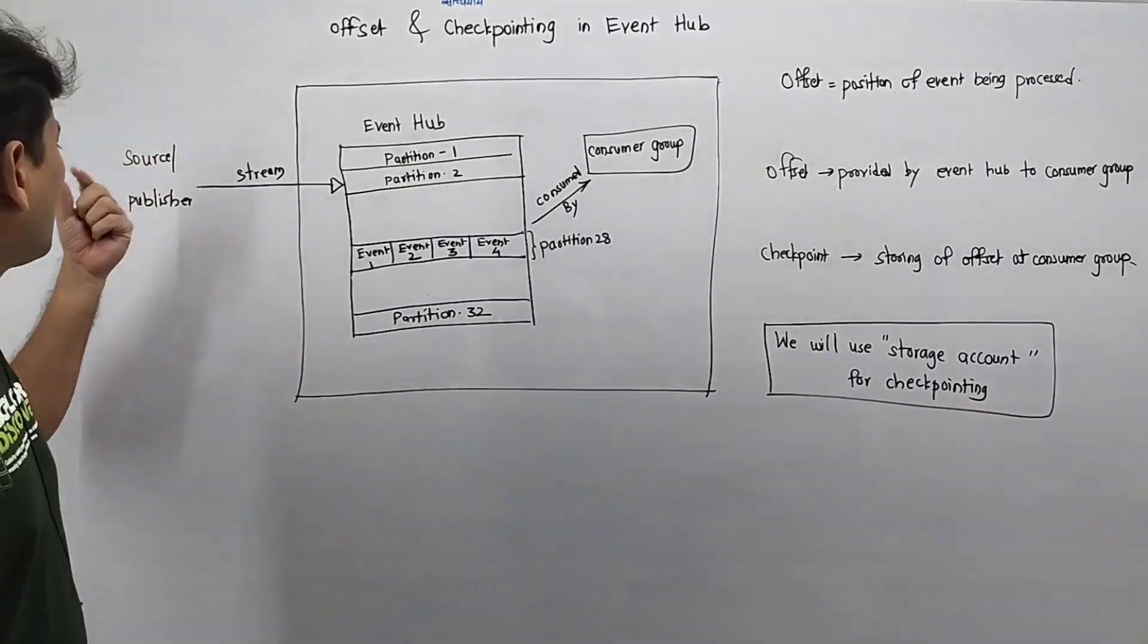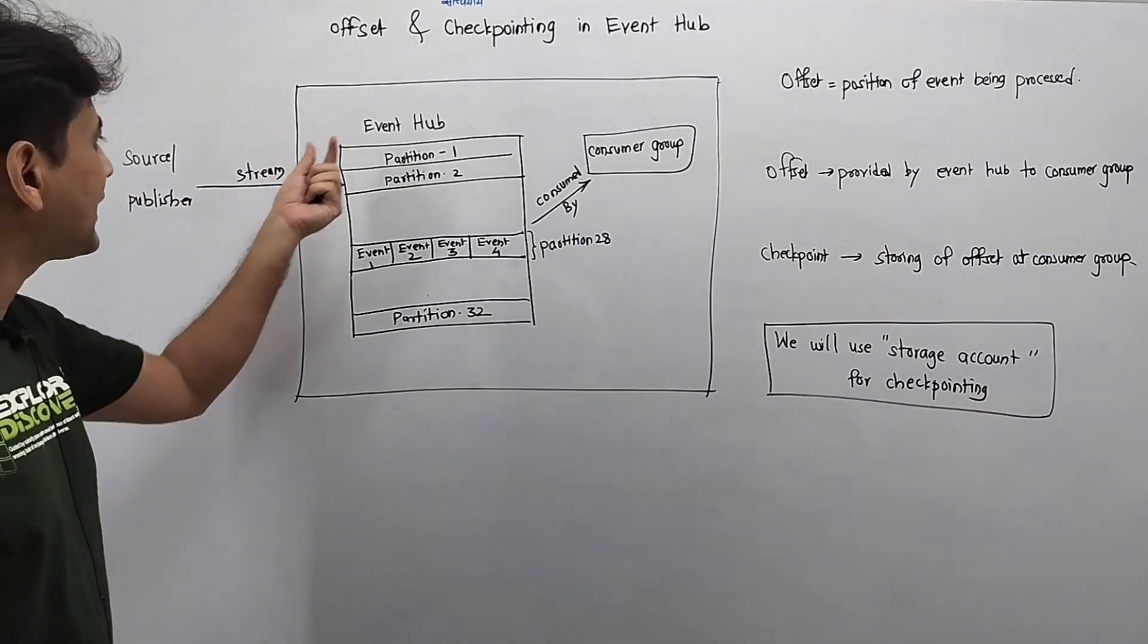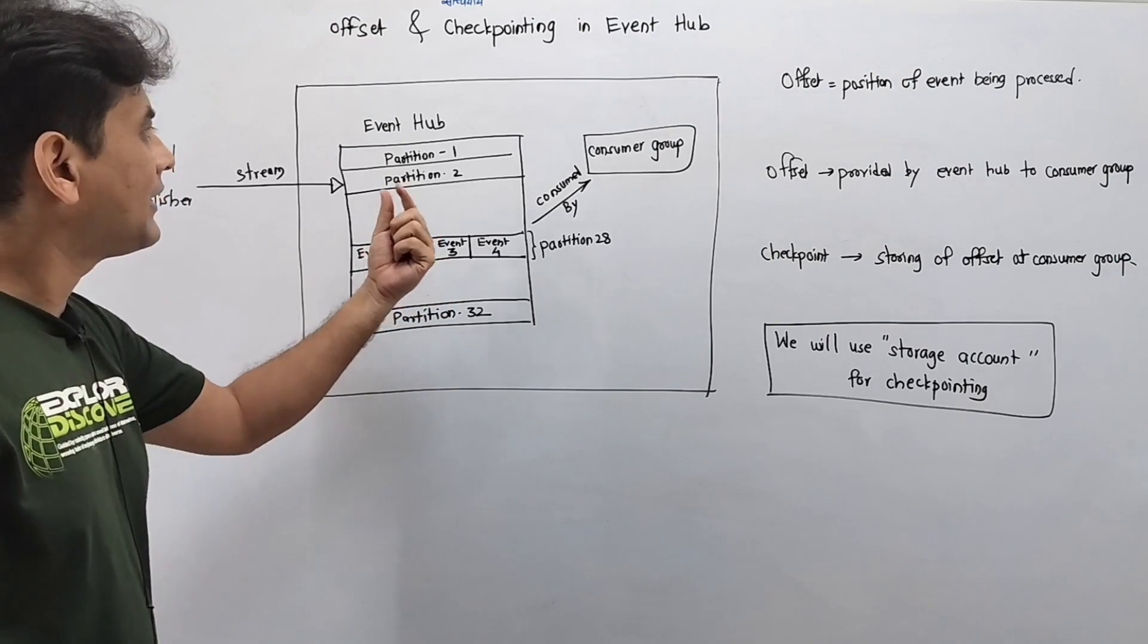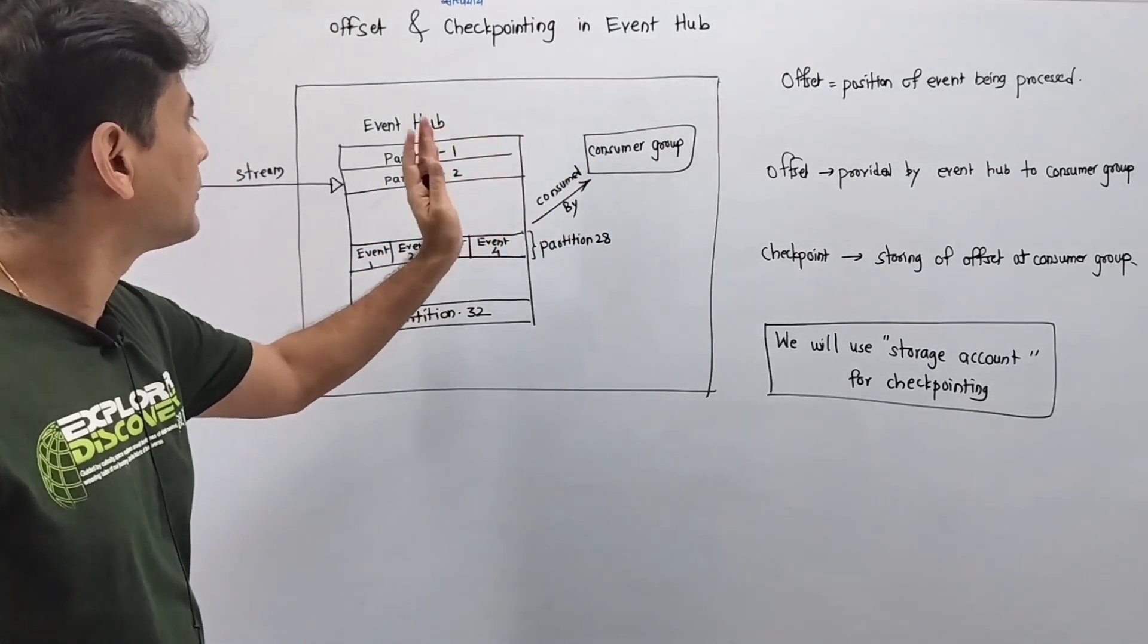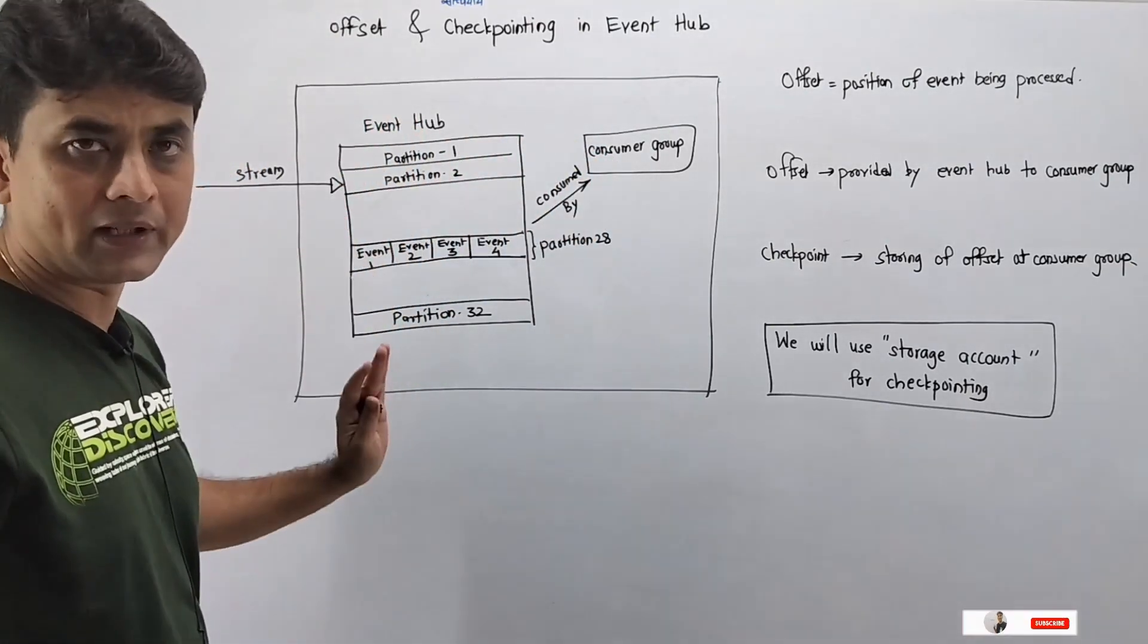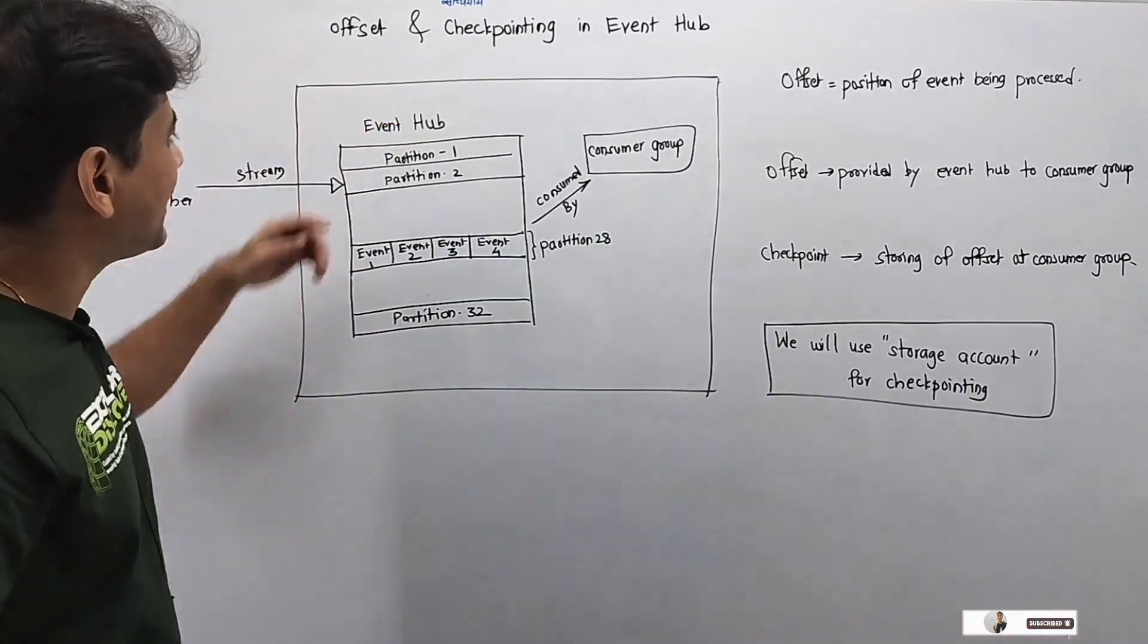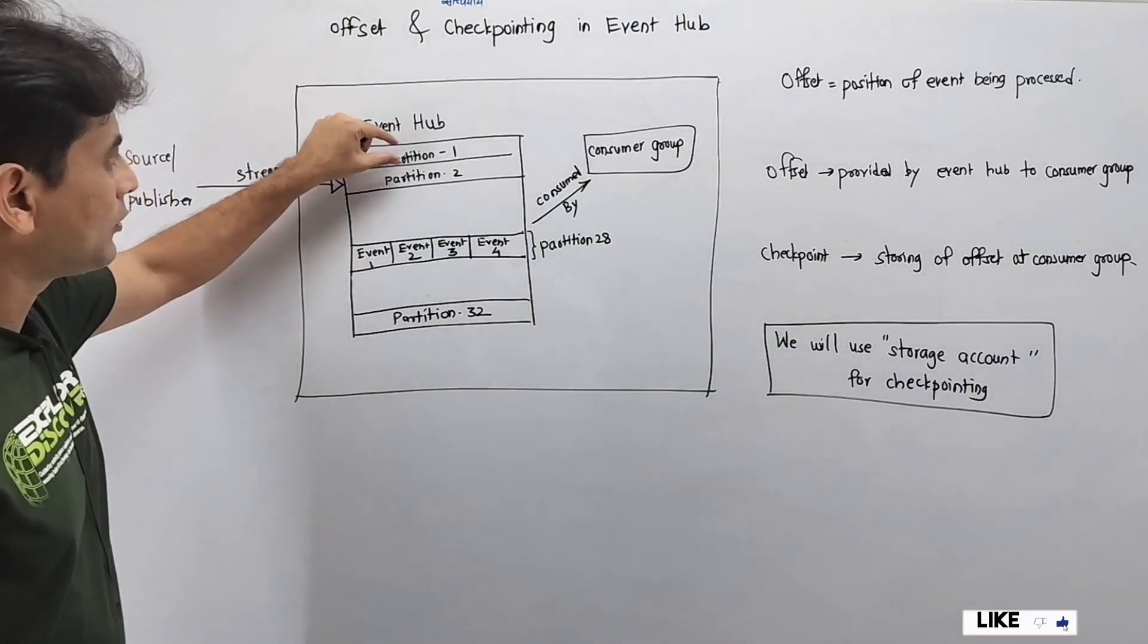We have the source or publisher which will stream data to this Event Hub, and we have consumer groups which will consume the events or data from this Event Hub. Event Hub internally contains partitions—partition one, two—so like this we can have 32 partitions.